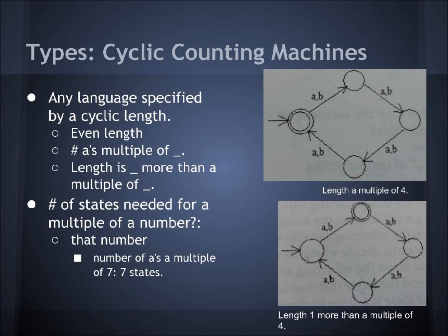Type 2 is a cyclic counting machine. These accept any language specified by a cyclic length, such as even length, number of A's is a multiple of say 4, or length is 2 more than a multiple of 5. The number of states needed for a multiple-of-N machine is N. For instance, a number of A's is a multiple of 7 would need 7 states.